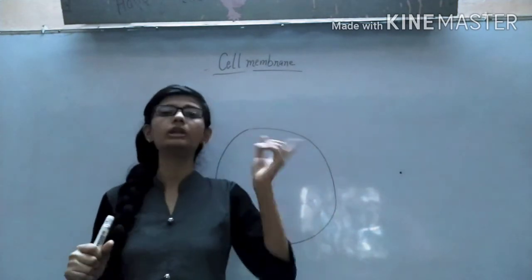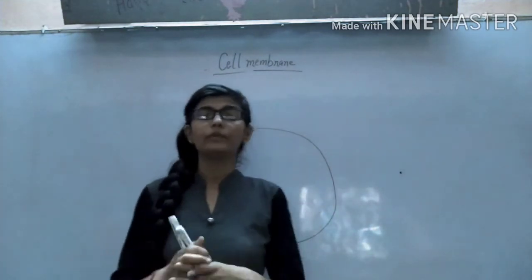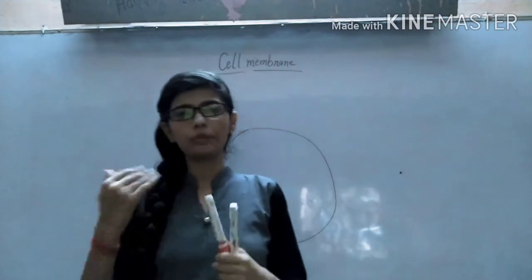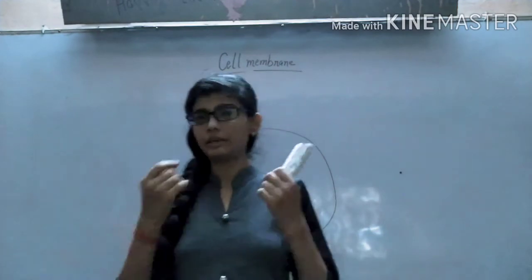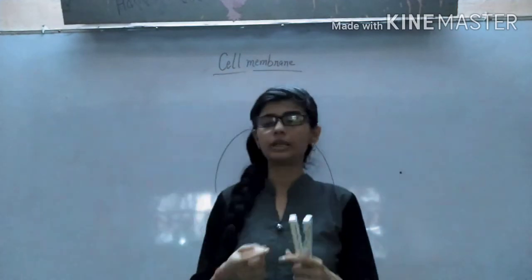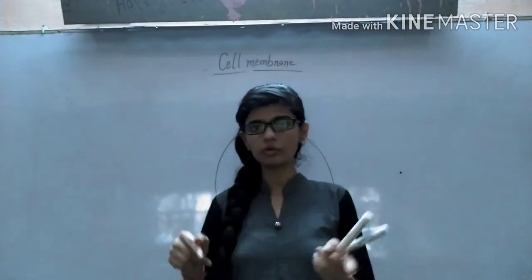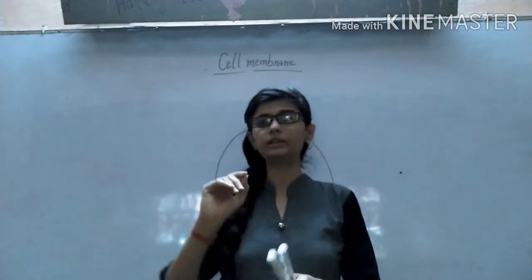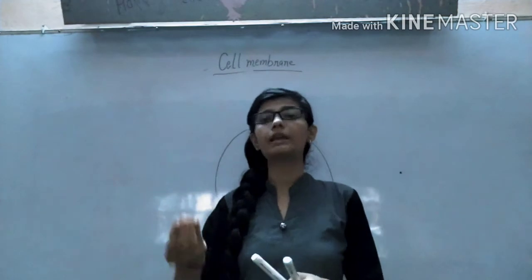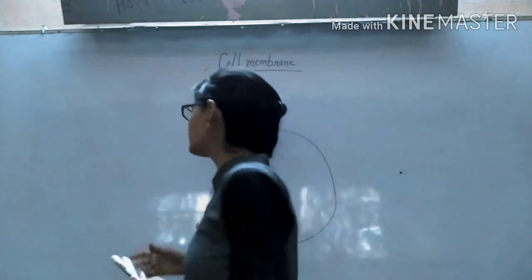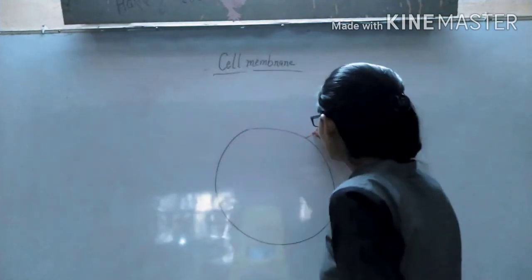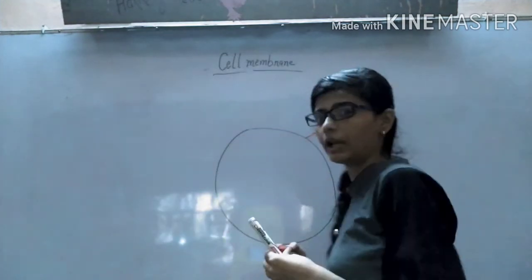In the plant cell, the outer boundary is called the cell wall. So when you see the outer boundary of the cheek cells, that outer boundary is the cell membrane. So the cell membrane is the outer boundary of the cell.